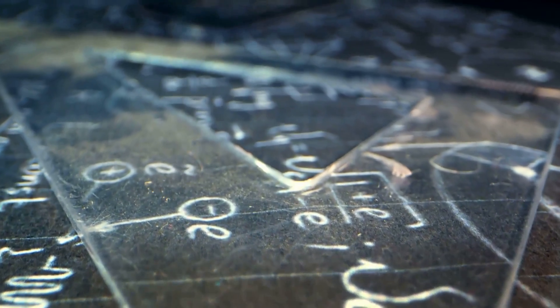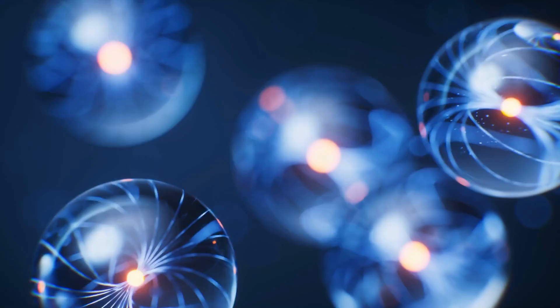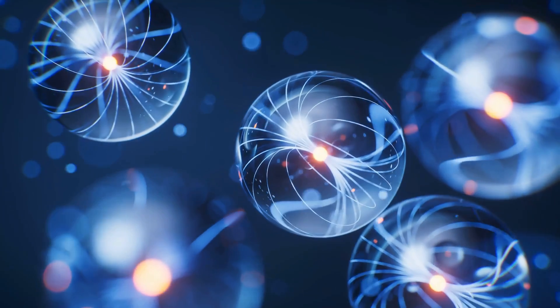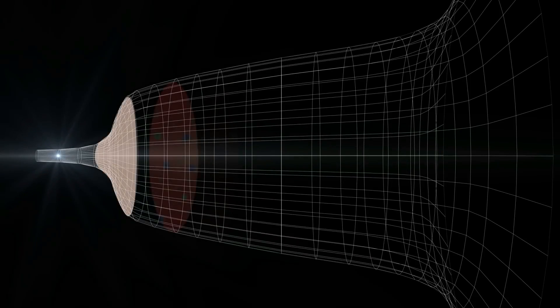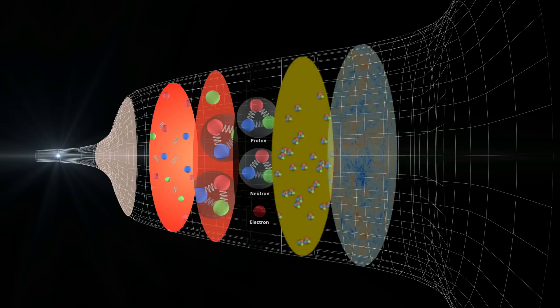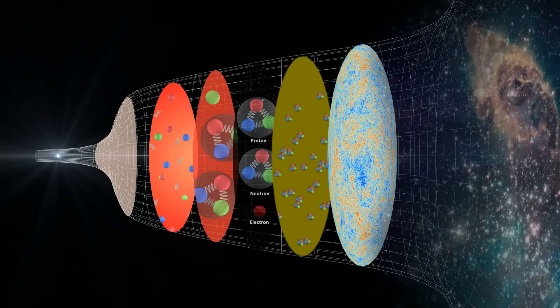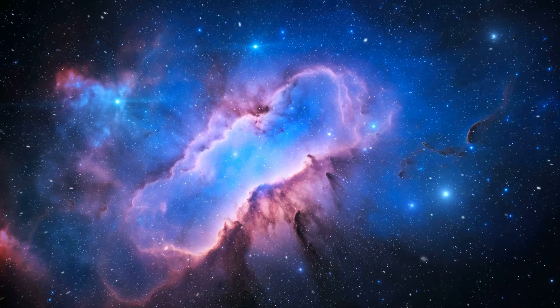In the realm of modern physics, two foundational pillars stand tall: Einstein's general relativity and quantum theory. To unravel the mysteries of the Big Bang and what preceded it, we must harmonize these two theories. Only then can we address the ultimate cosmic questions. What is space? What is time? What constitutes the universe? And where did it originate?